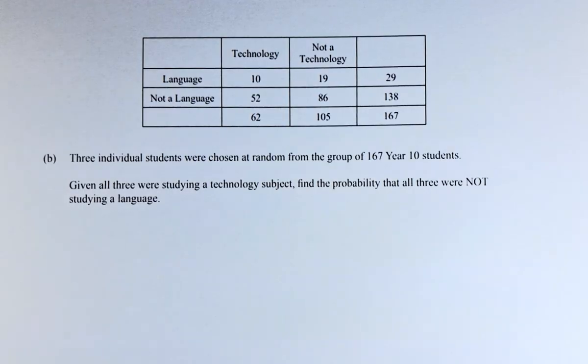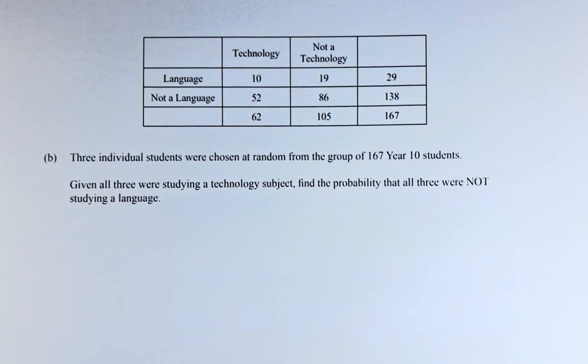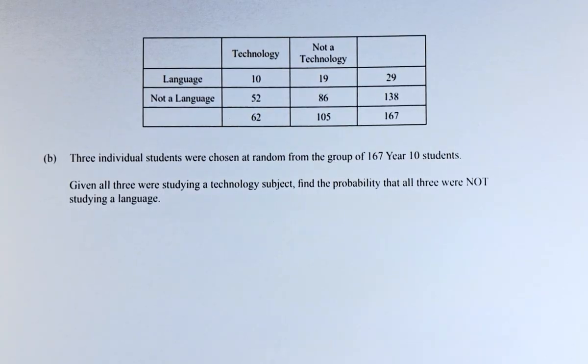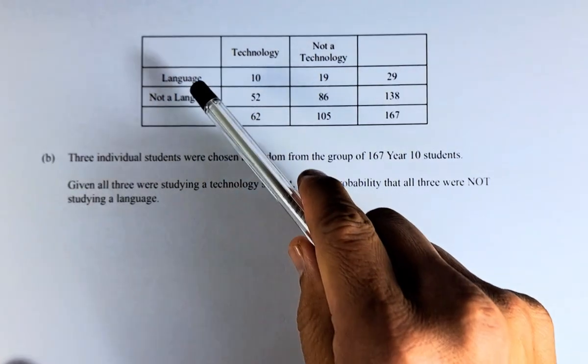Three individual students were chosen at random from a group of 167 year 10 students. Given that all three were studying a technology subject, find the probability that all three were not studying a language.